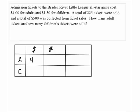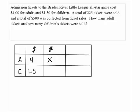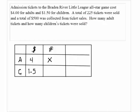And $1.50 for the children's ticket, so we put $1.50. The total of 225 tickets were sold, and we collected $500. We don't know how many tickets were sold for adults, so we assume X tickets were sold for the adult ticket. Because the total is 225, if we sold X adult tickets, the rest — 225 minus X — would be sold for the children.